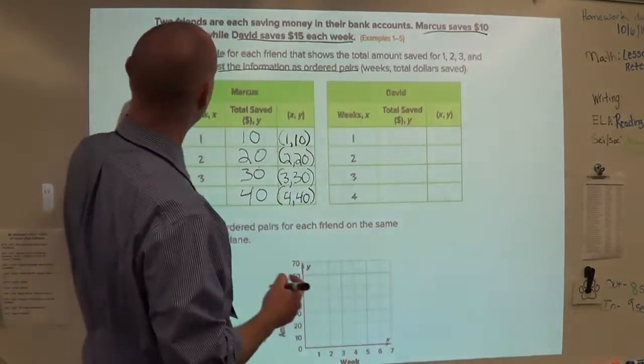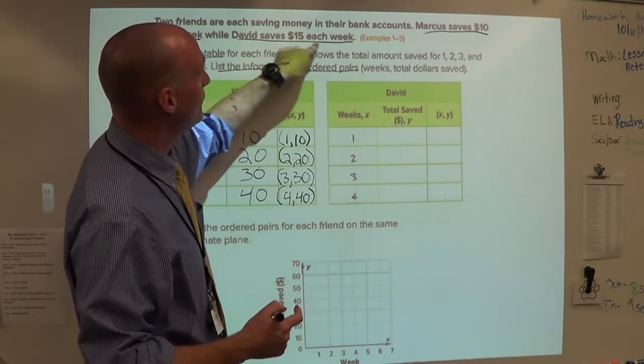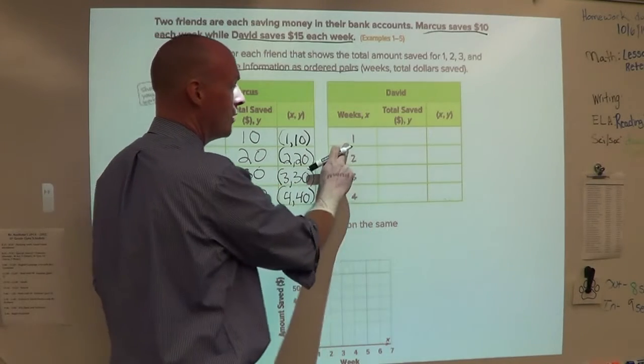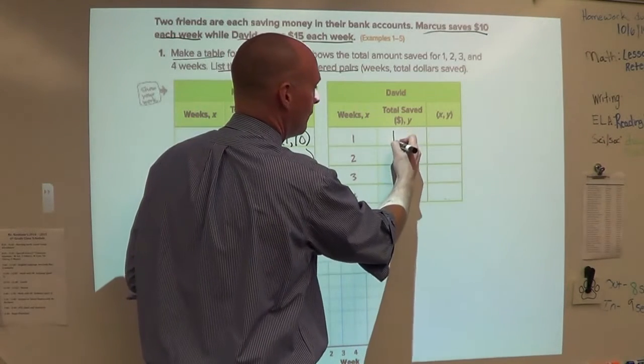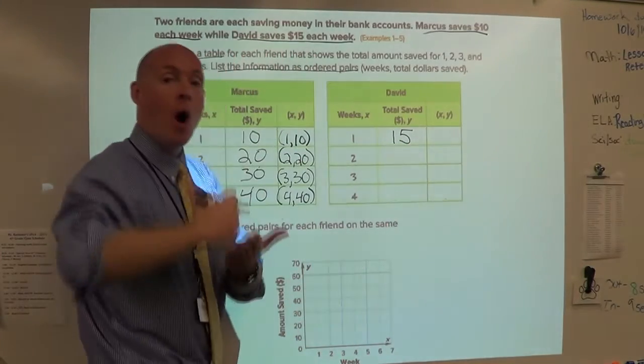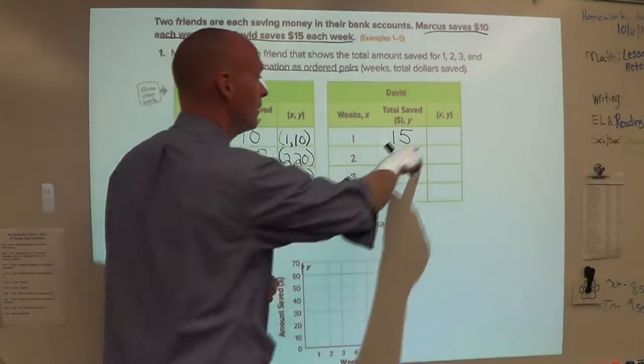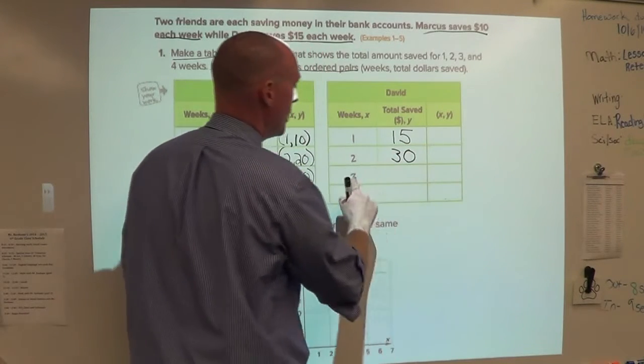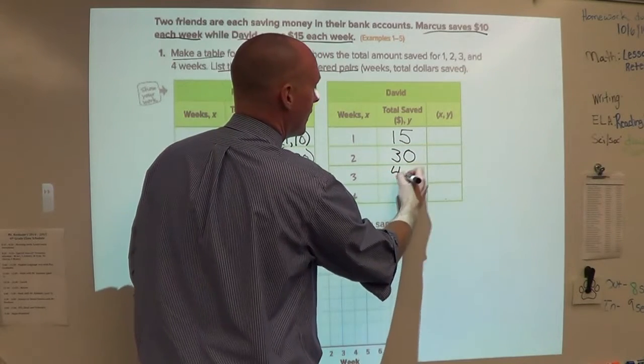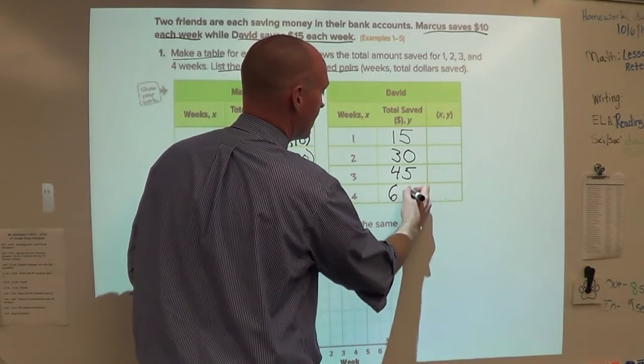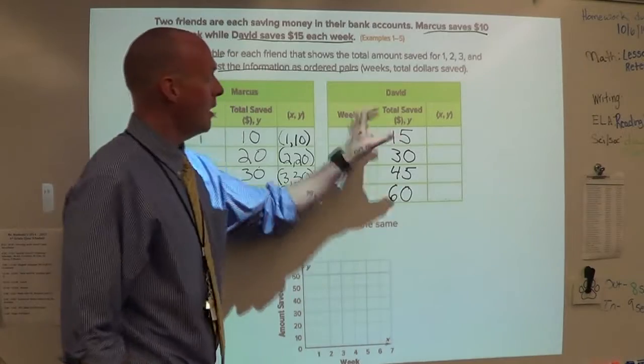Marcus saves $10 each week. David saves $15 each week, so a little bit more money. But we do have weeks one through four. So week one, David would save $15. Now to go to week two, we have to go up 15. 15 and 15 is 30, so week two would be 30. Week three would be 45, and week four would be 60.